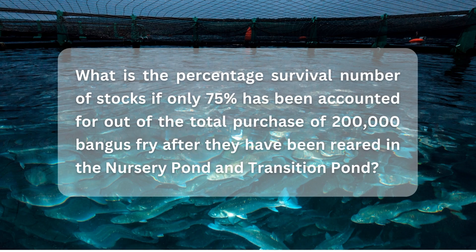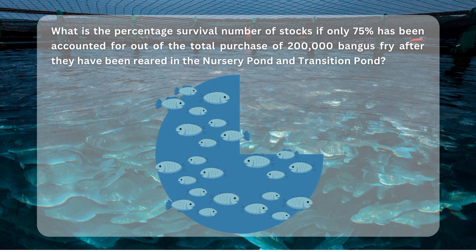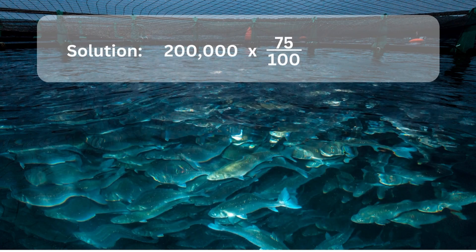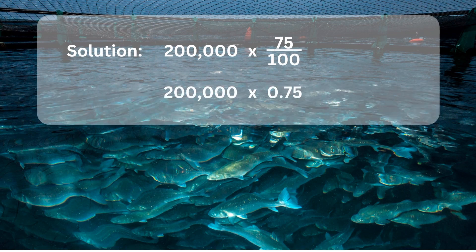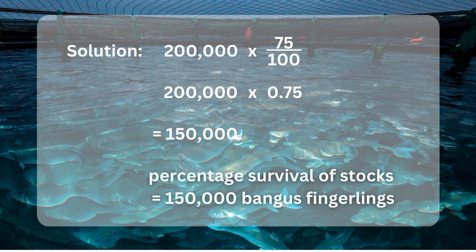For example, what is the percentage survival number of stocks if only 75% has been accounted for out of the total purchase of 200,000 bangus fry after they have been reared in the nursery pond and transition pond? We solve this by multiplying 200,000 by 0.75, which is the decimal form of 75%. This is equal to 150,000. Therefore, the percentage survival of stocks is 150,000 bangus fingerlings.